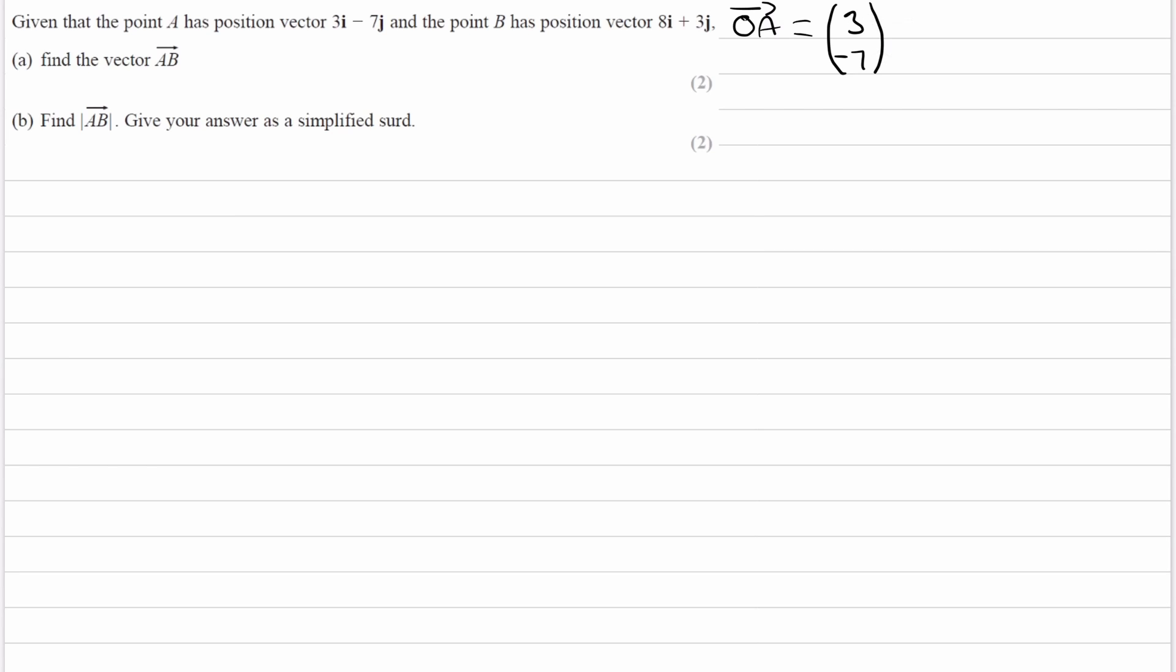And then for vector B, the position vector of B, this will be equal to 8, 3. So I prefer to use column notation. I find it easier to manipulate the vectors and write down.